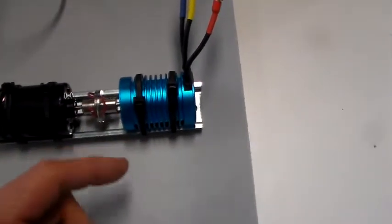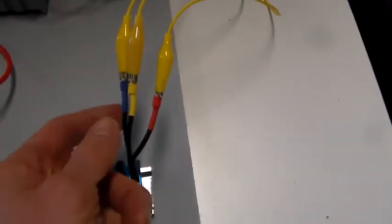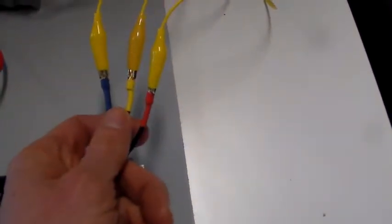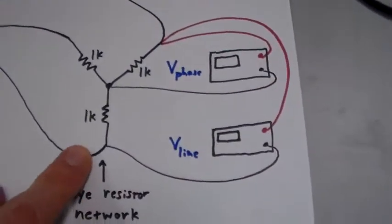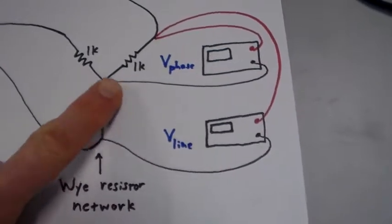Permanent magnet rotor with a 3-phase stator winding. The three power connections coming out of my generator here are going over to the set of terminal blocks and resistors, forming a Y-shaped network, 1K resistors each.